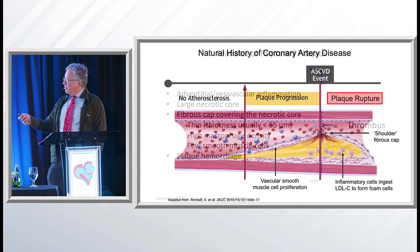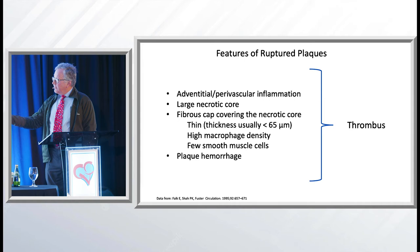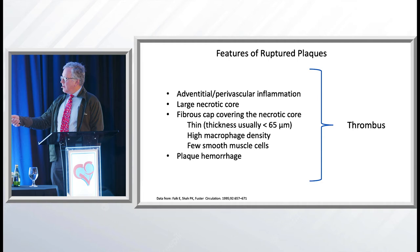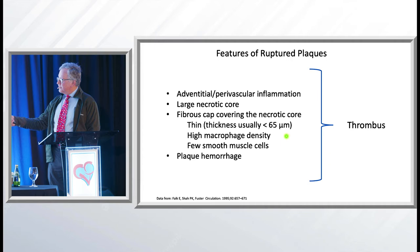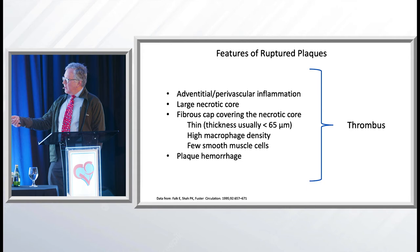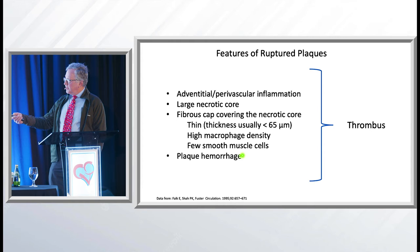If you have a ruptured plaque, there's the adventitia and perivascular inflammation from the lipids, and you have a necrotic core — a core of cholesterol in the middle — which is the part that can actually change. A fibrous cap covers it, and as we'll talk about, it's usually about 65 microns thick. A micron is a millionth of a meter — a very small distance. You also have high macrophage density; macrophages invade the necrotic core, and eventually you get a tear in the lining and plaque hemorrhage with thrombus. The fibrous cap is what tears.